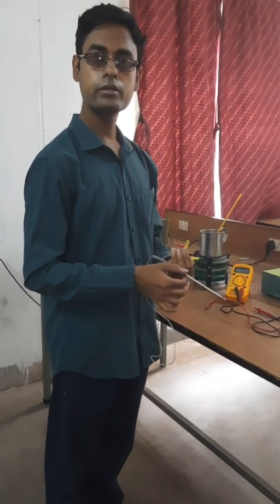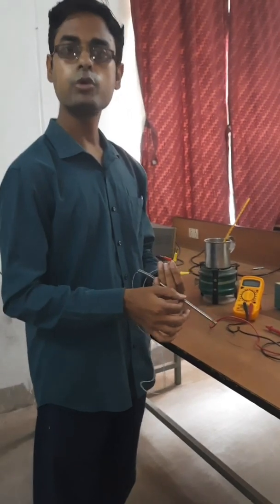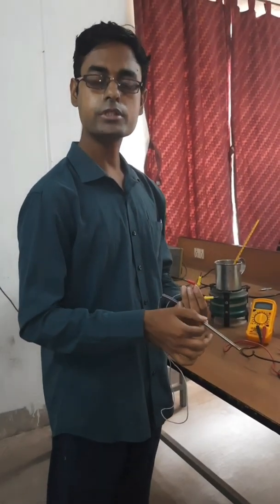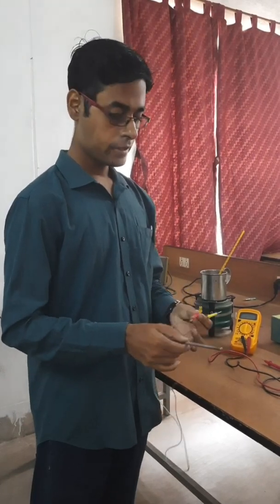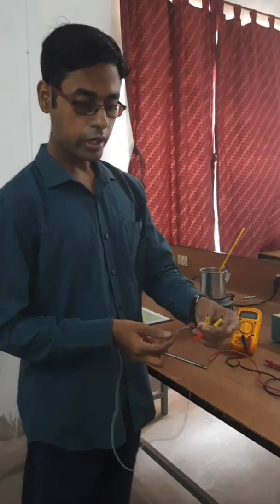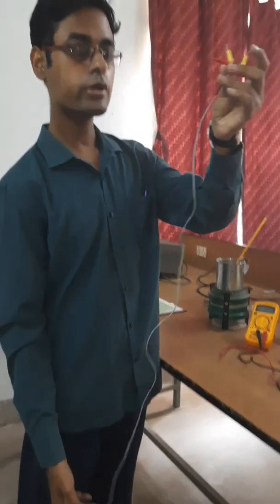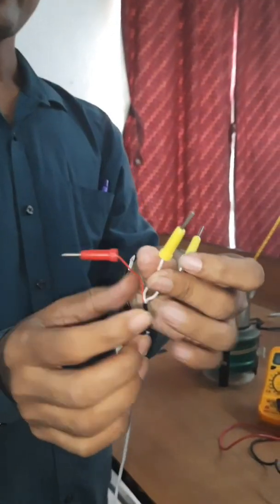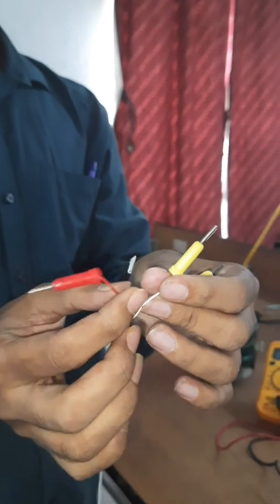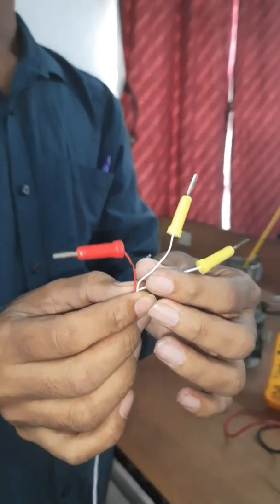This is the RTD element which is inside this thermowell. This thermowell is made of stainless steel. The RTD element is PT100. You will find that this is a 3-wire RTD. The connection all the way through comes out to be a 3-wire RTD. Here one of the wires is red, the other two are white color.